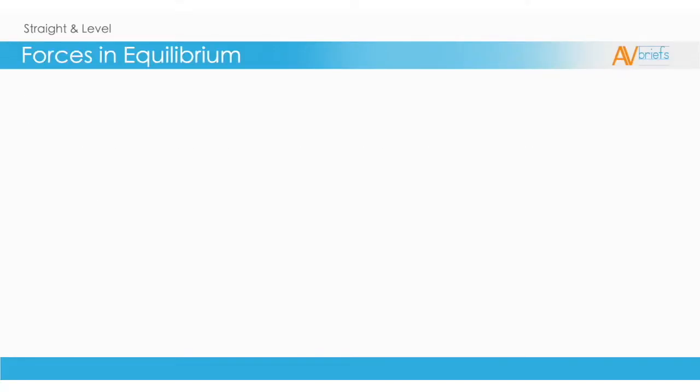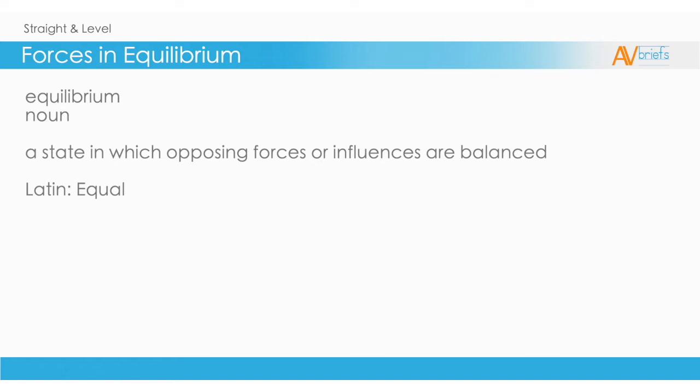As always, let's correctly define what we're talking about. We said that to achieve straight and level flight we must have the airplane in a state of equilibrium. Let's make sure we are using the correct definition of equilibrium to avoid unnecessary confusion.